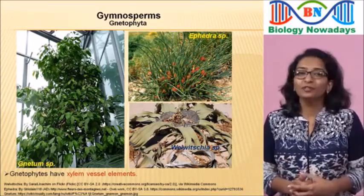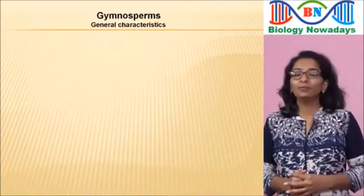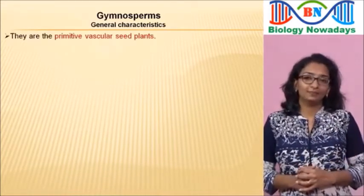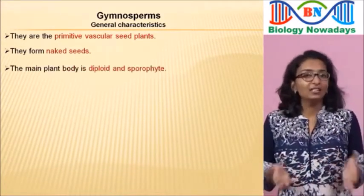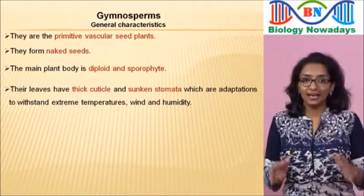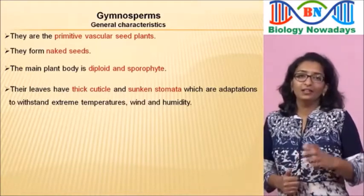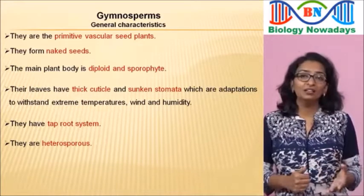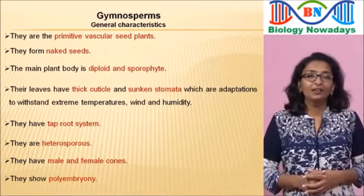Now let's have a short look at the most important features of gymnosperms. They are the primitive vascular seed plants. They form naked seeds. The main plant body is diploid and sporophytic. Their leaves have thick cuticle and sunken stomata — adaptations to withstand extreme temperatures, wind and humidity. The roots are generally tap roots. They are heterosporous, they have male and female cones, and they show polyembryony.